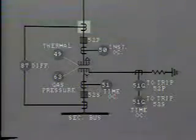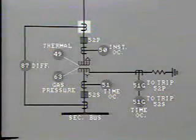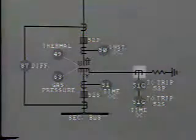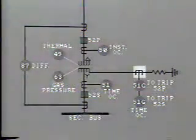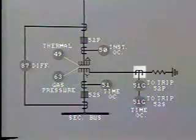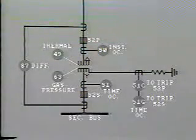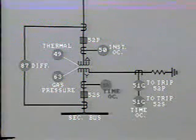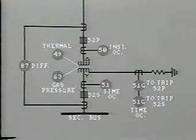This is a commonly used symbol for a CT, but please make sure you are familiar with your own company standards. This CT is installed in the neutral to ground connection, measuring ground current. It feeds time overcurrent relays, 51G. Another time overcurrent relay, 51, is installed on the secondary output before the breaker.